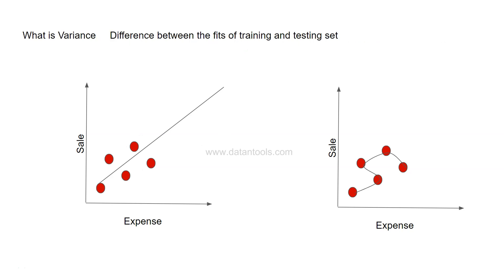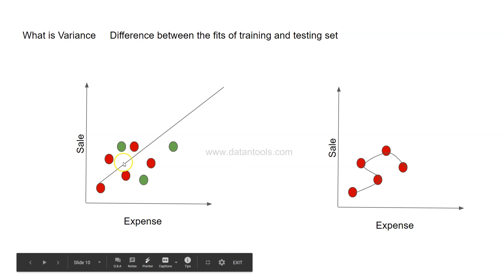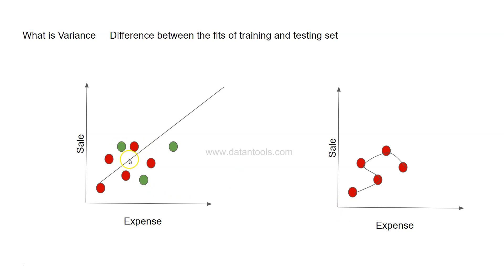Now let's understand variance. Variance is the difference between the fit on the training set and the testing set. We have the best model representing the data points and the overfitted model trying to capture most of the training points. Let's see how well they fare on unseen or testing data. We have three test data points, and from the best-fit line you can see it will do a better job in terms of predicting them. After prediction, the data points are plotted and we calculate the variance for these three data points.